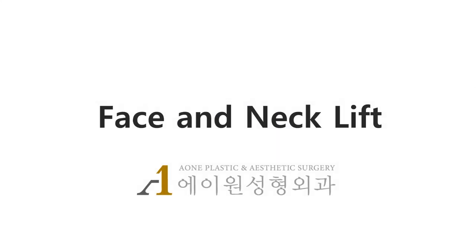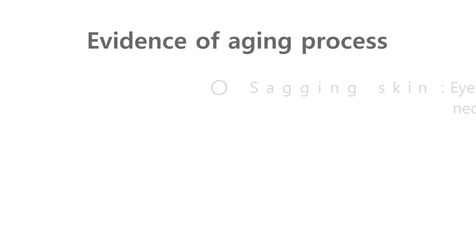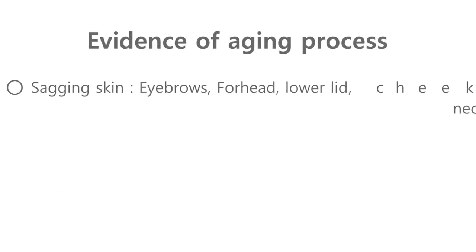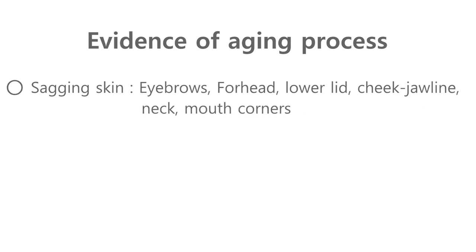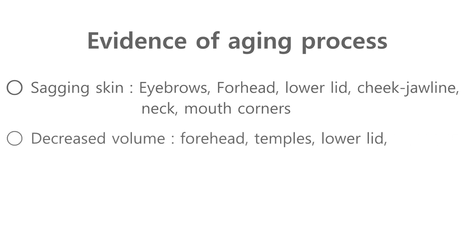This time I will explain how to correct the aging process on face and neck. Aging process first appears as aging skin. Therefore, areas such as forehead, eyebrows, fat pouch under the eye, cheeks, jawline, neck and mouth corners start to sag. The next phenomenon of the aging process is a decrease in overall facial volume.